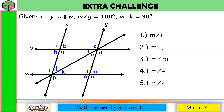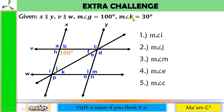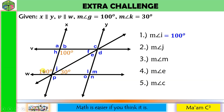Let us do an extra challenge. Though our lines do not have arrowheads, it is given that line X is parallel with line Y, and line V is parallel with line W. The measurement of angle G is 100 degrees and the measurement of angle K is 30 degrees. We are going to find the measurements of the following. Number 1: the measurement of angle I. If angle G is 100 degrees, then angle I is also 100 degrees because alternate interior angles are congruent.